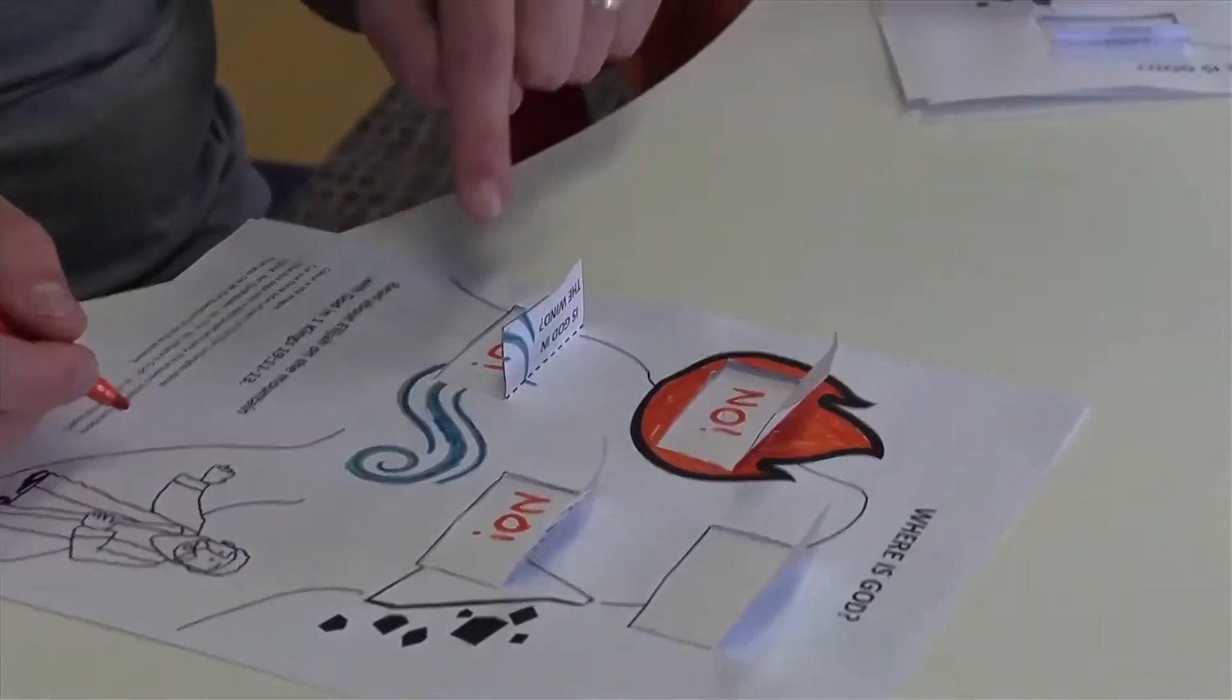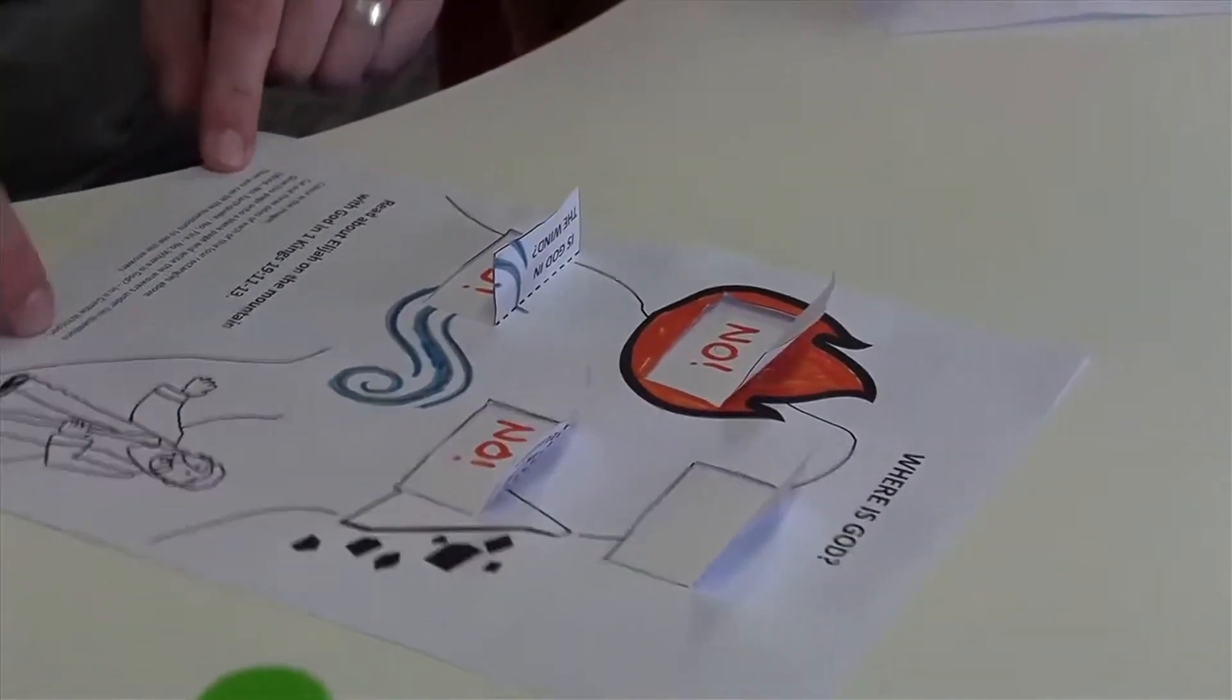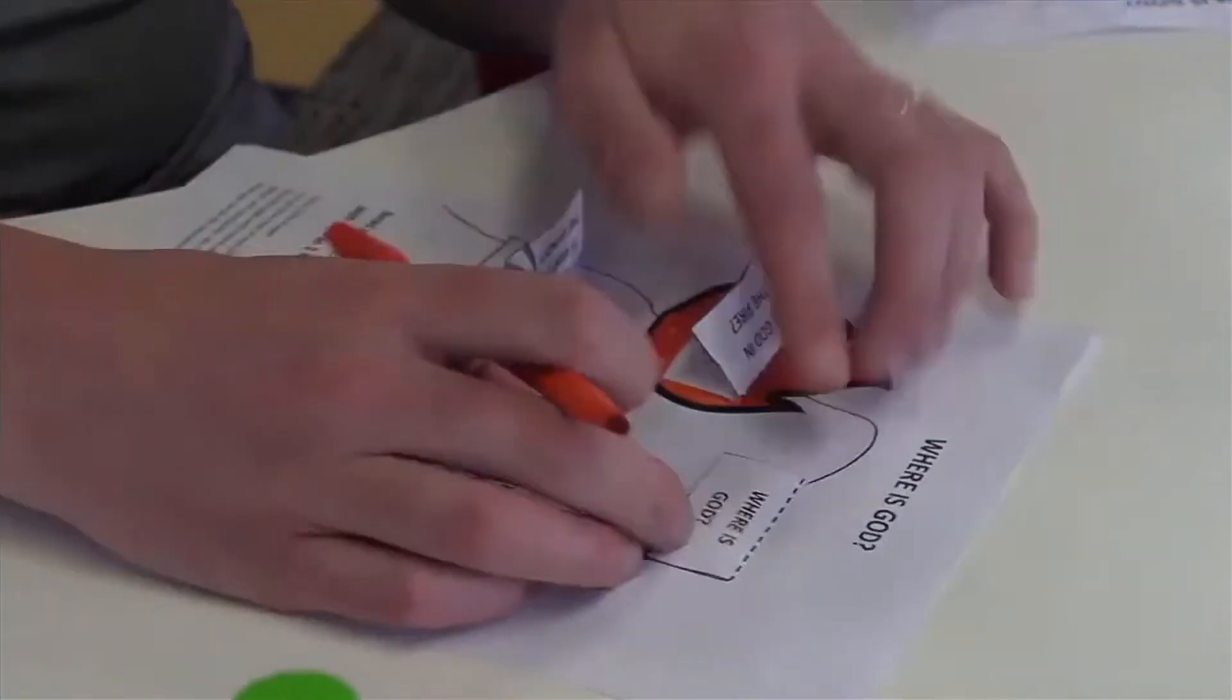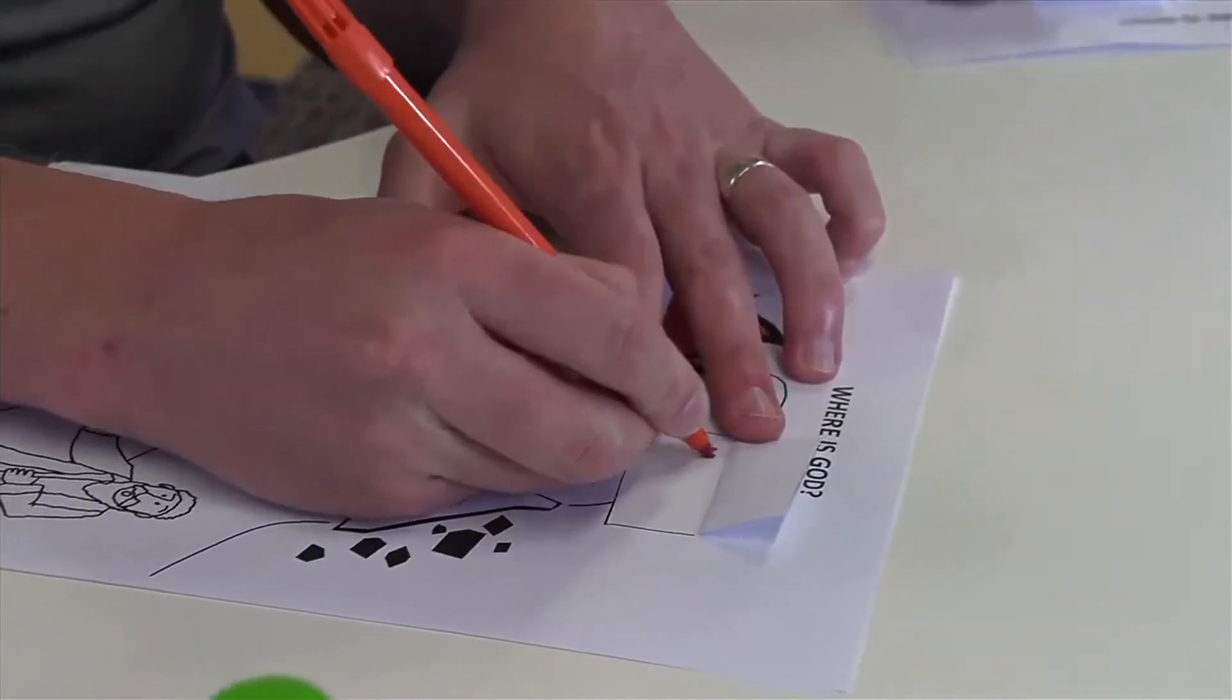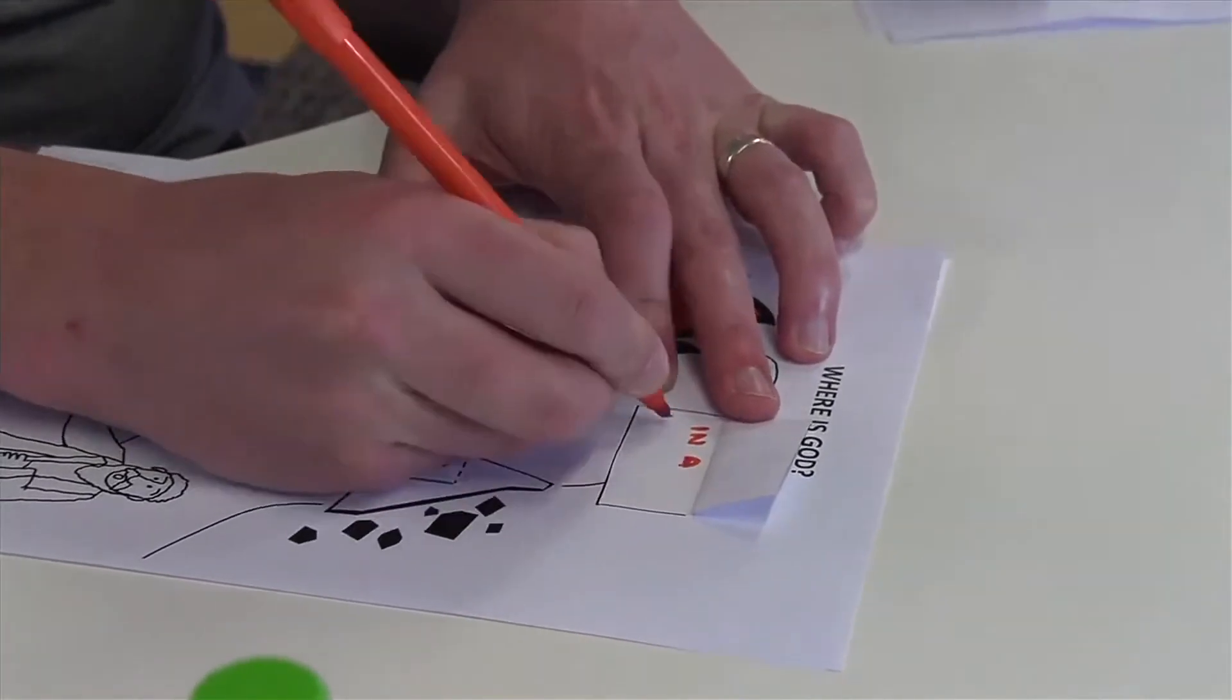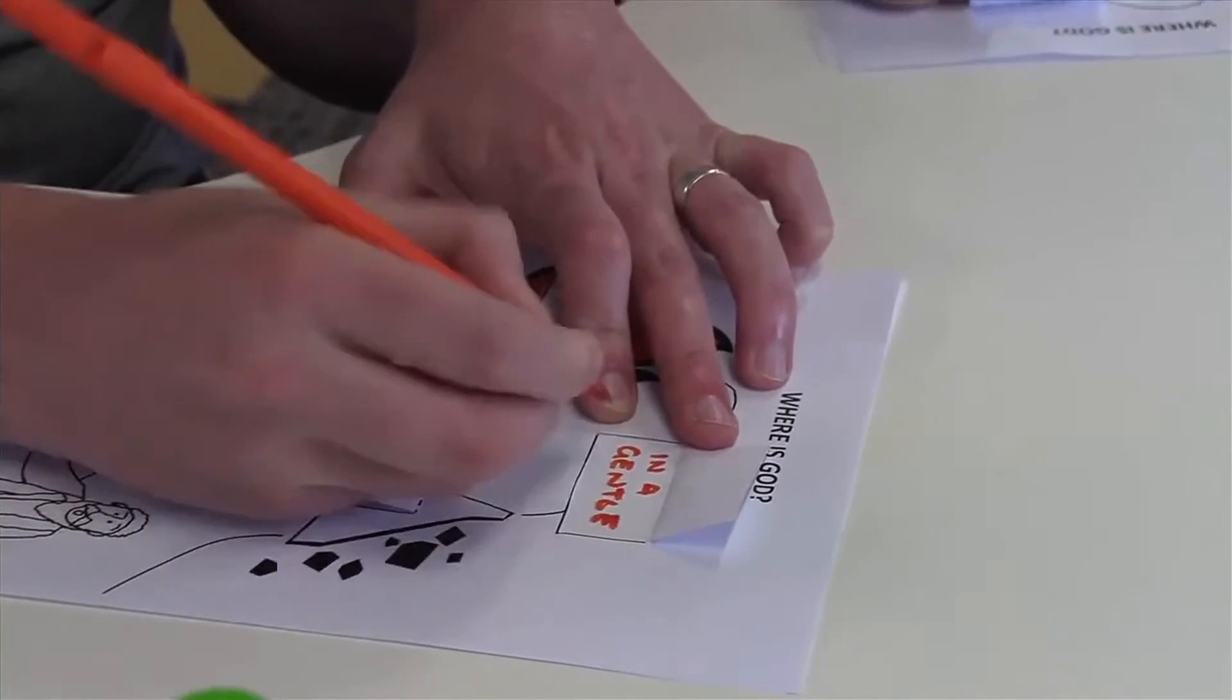So God was not in the fire. He was not in the wind and he was not in the earthquake. Our instructions are down here. It's for the one that says, where is God? It says, in a gentle whisper. So in a gentle whisper.